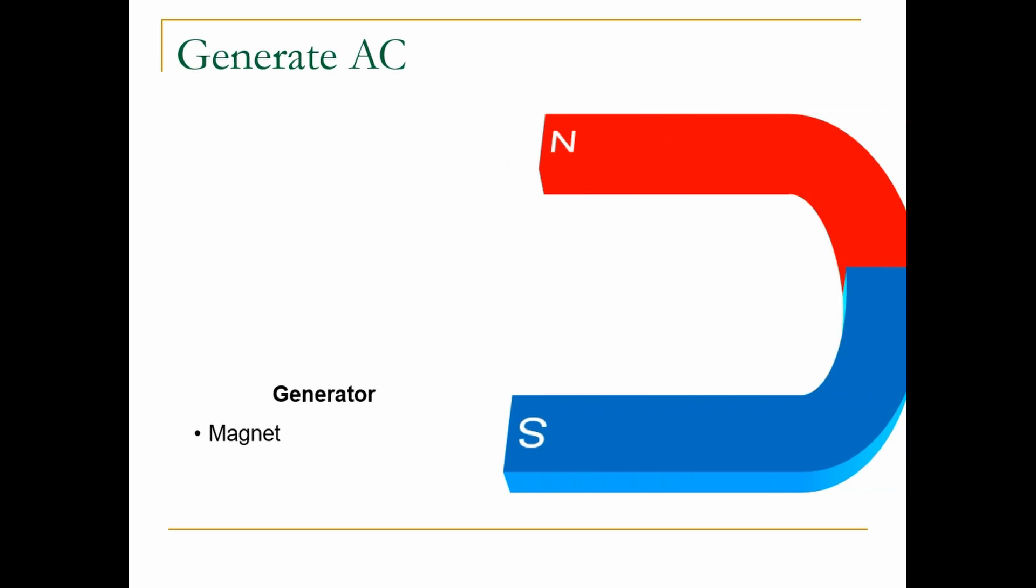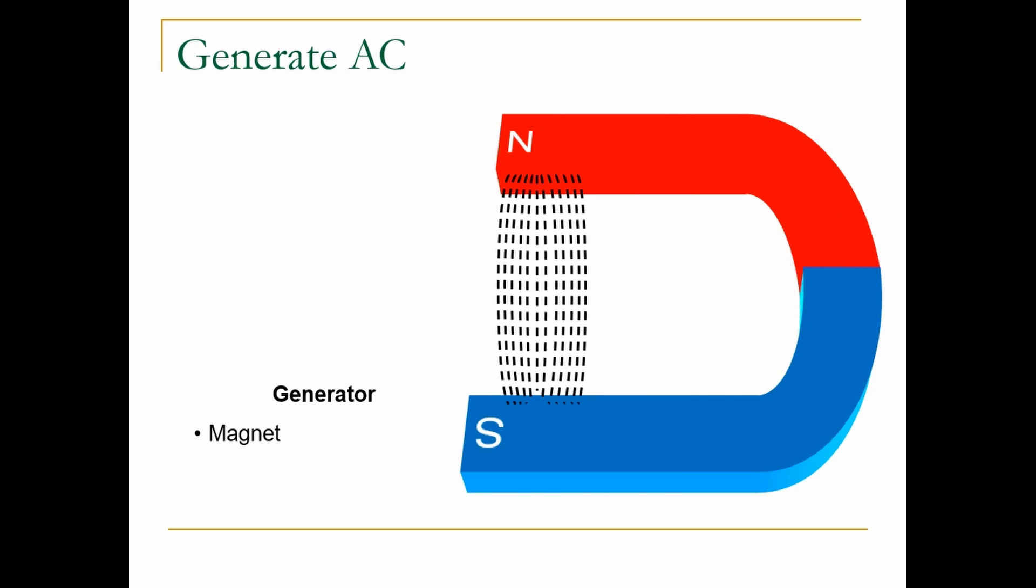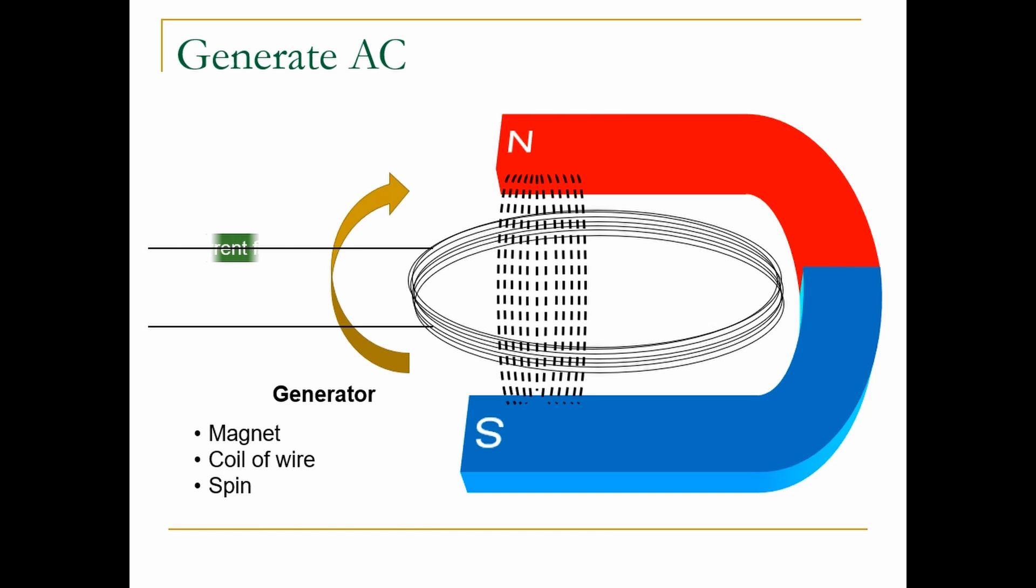In its most basic form, a generator consists of a large magnet. Inside this magnet, we place a coil of wire. As we spin the coil in the magnetic field, a current flow is induced in the wire.